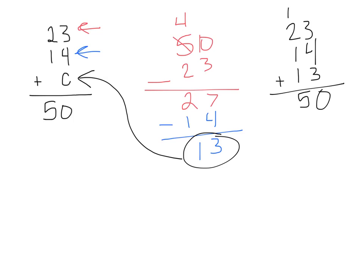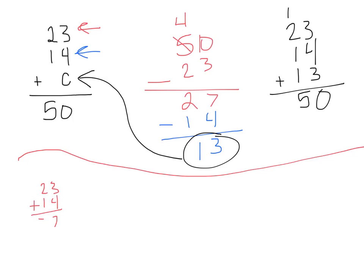There could also be a shortcut. What we could have done is added 23 plus 14 to find out what they were together — that's 37 — and then taken 50 minus 37, and we would have still ended up with 13. Both of these ways are viable for solving this problem. With today's lesson, we're going to be doing multiple steps using addition and subtraction to undo each other, but we are going to be using fractions.